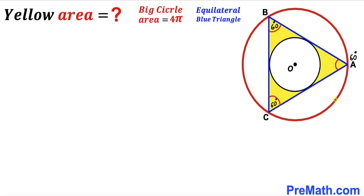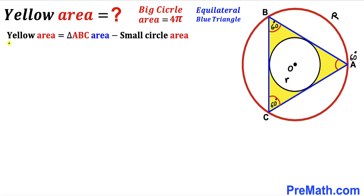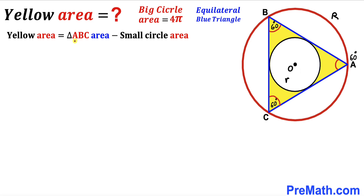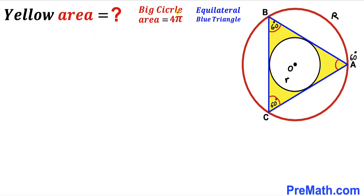Since we are dealing with two concentric circles, let's label the radius of the big red circle as uppercase R and the radius of the smaller circle as lowercase r. Now, an important observation: the yellow shaded region area equals the area of triangle ABC minus the area of the smaller circle. So our task is to calculate both of those.